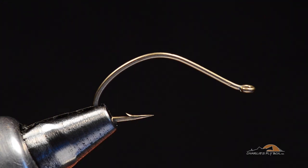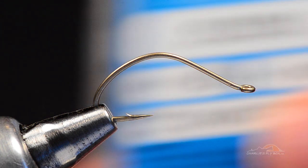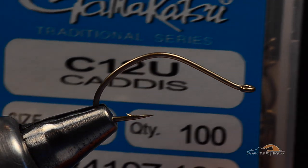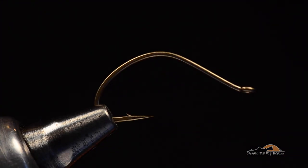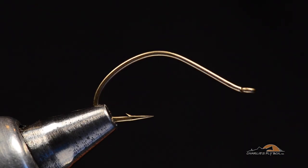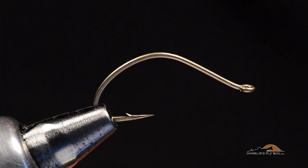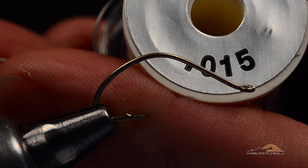So I'm going to start with a Gamakatsu C12U, and this is a size 6. You can see it's a kale style, it's like the old Mustad 37160, kale style bend, and I'm going to take some 15 thousandths lead wire.